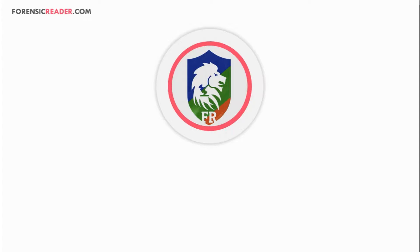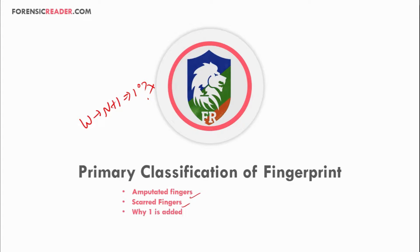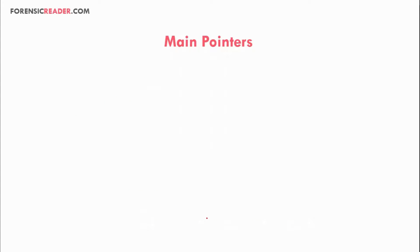You probably have a basic understanding of how to come up with the primary classification of a fingerprint — just check for the whorls, number them, add one, and you get your primary classification number. Sounds simple, but not so much. There are many things needed to consider, such as primary classification values in amputated fingers, scarred fingers, and why one is added. Can special whorls like double loop whorls also be included in primary classification?